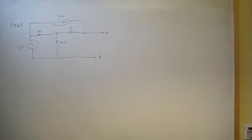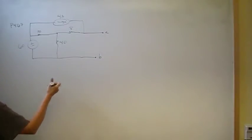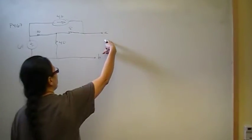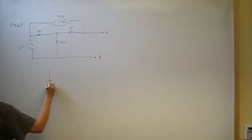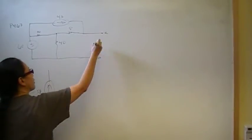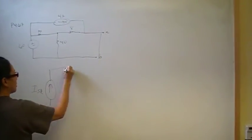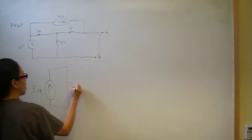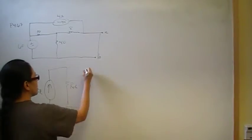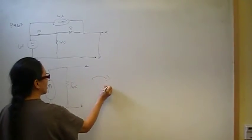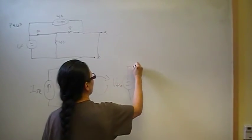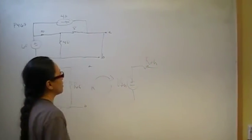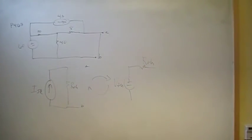We're looking for a Norton Equivalent Circuit, which represents all the circuit elements from the point of view of a load in terms of a single independent current source — some I short circuit — and that's the short circuit current that flows through the load, in parallel with some equivalent resistance R_Thevenin. That's identical to a source transformation of V_Thevenin in series with R_Thevenin.